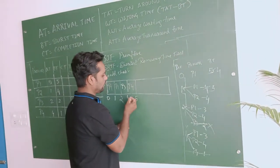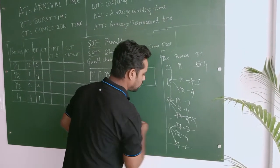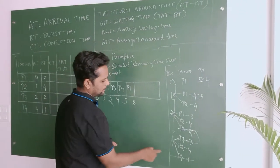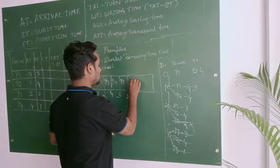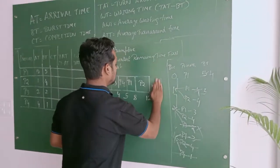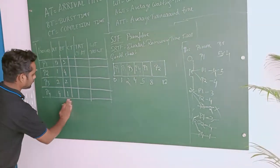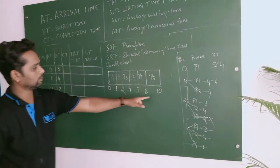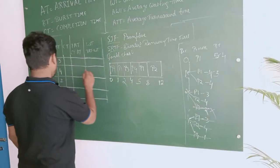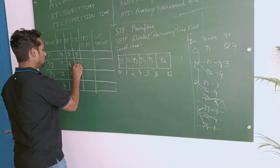In non-preemptive phase: P4 has the shortest time of 1 second, so P4 executes 1 second — completion at 5 seconds. Next, P1 with 3 seconds: 5 + 3 = 8. Remaining P2 with 4 seconds: 8 + 4 = 12. Adding all burst times — 1 + 1 + 1 + 2 + 3 + 4 — confirms the total. Completion times: P1 = 8, P2 = 12.